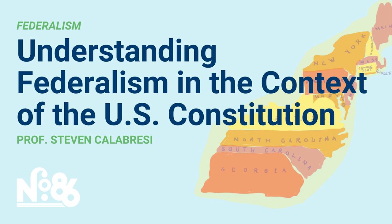The 17th Amendment, also ratified in 1913, eliminated a provision in the original Constitution under which state legislatures elected U.S. senators, and put in place the current system where the people of each state elect U.S. senators. This greatly transformed the nature of the Senate. Prior to 1913, the Senate was a little bit like the United Nations — senators were ambassadors from state legislatures and were responsive to state legislatures. Since 1913, senators have been much more sensitive to popular opinion, much less supportive of state power, and much more supportive of national power.